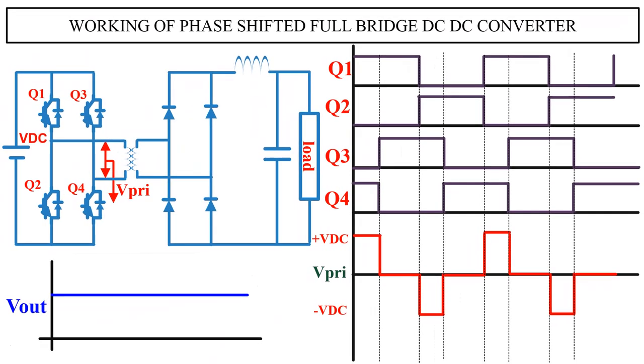By adjusting the phase shift between PWM Q1 and Q3, we can change the width of the transformer primary voltage. If we increase the width, the output voltage increases, and if we decrease the width, the output voltage decreases. This is how we control the voltage of a phase shifted full bridge DC-DC converter.